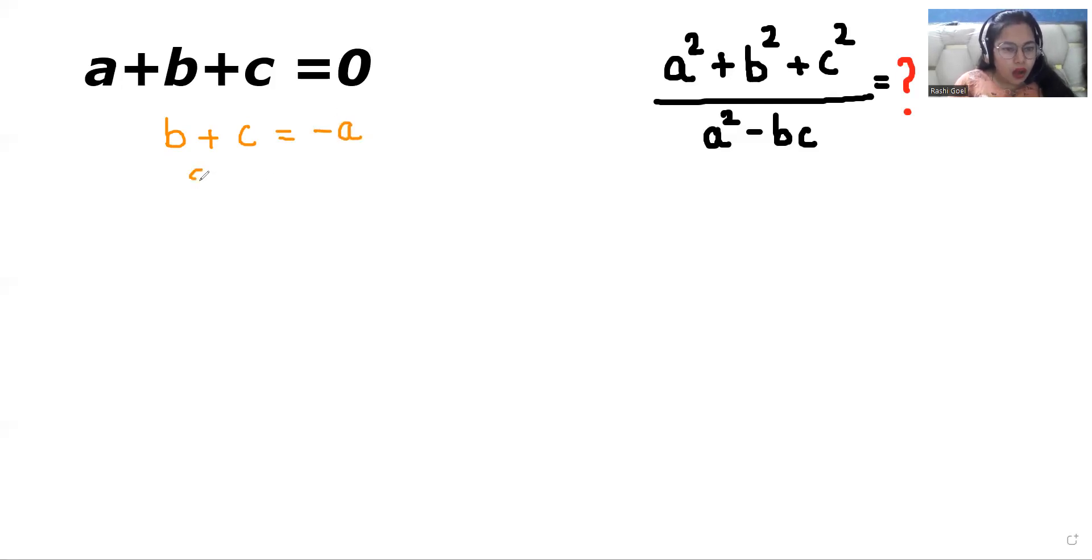Now I'm squaring both sides. So b plus c whole square is equals to minus a square.